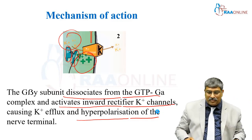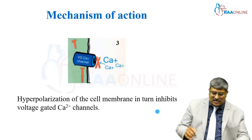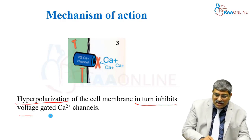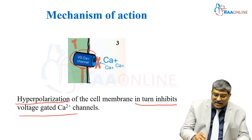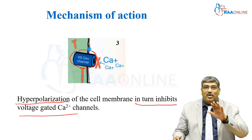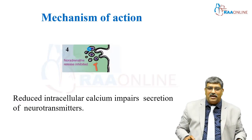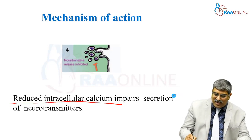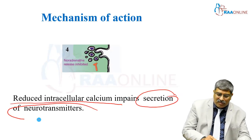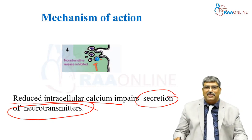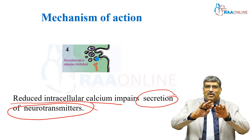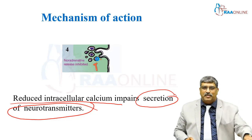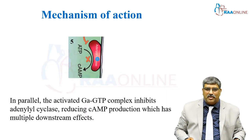As potassium increases and hyperpolarization occurs, this in turn inhibits voltage-gated calcium channels, so calcium entry is inhibited. This reduced calcium impairs the secretion of neurotransmitter. The final step is that neurotransmitter release is prevented by the action of dexmedetomidine at the alpha-2 receptor.